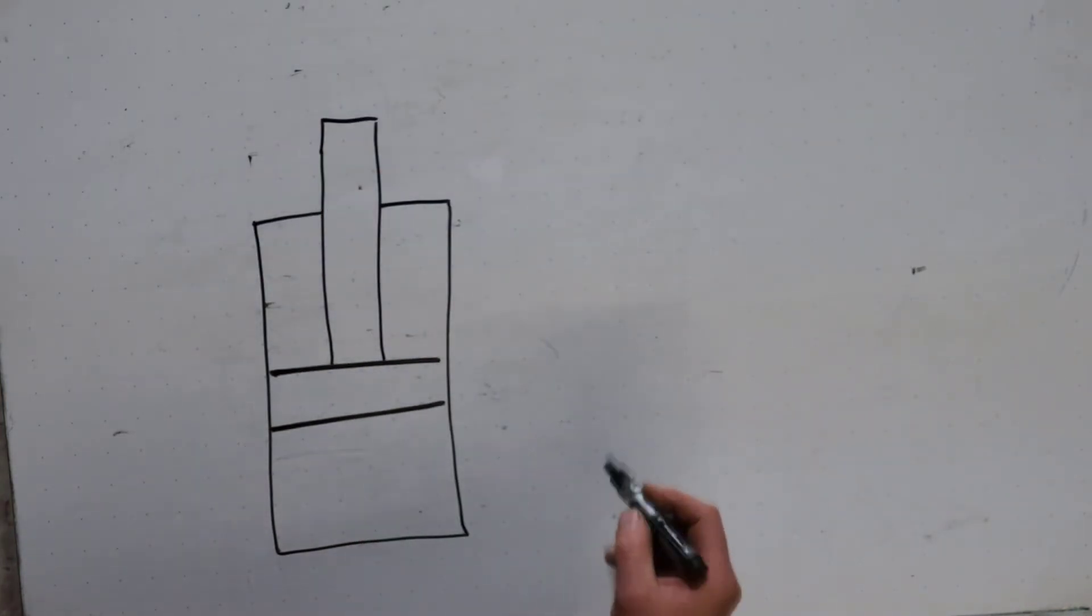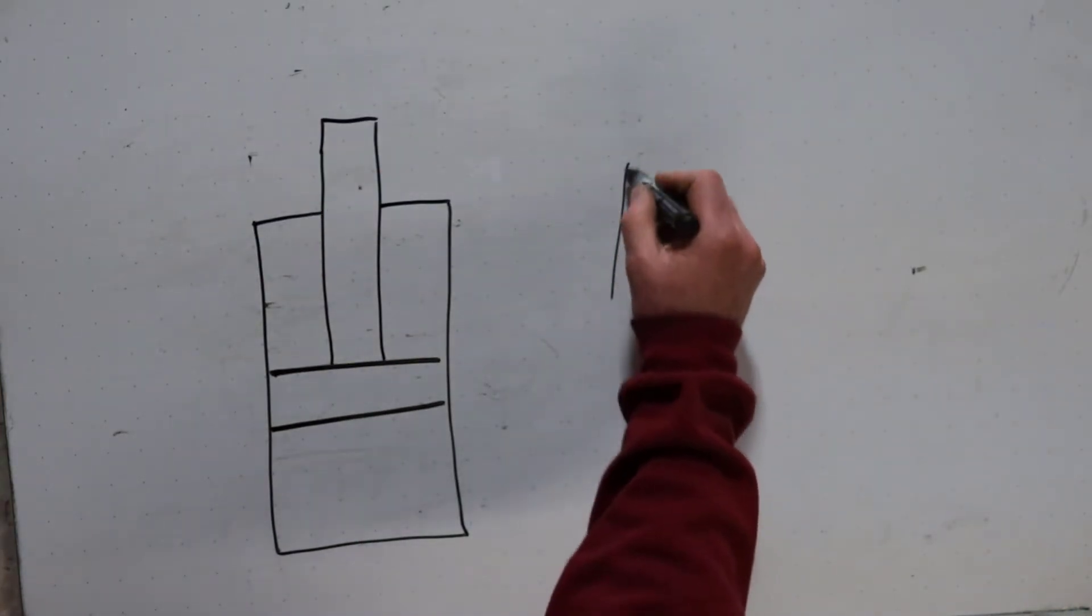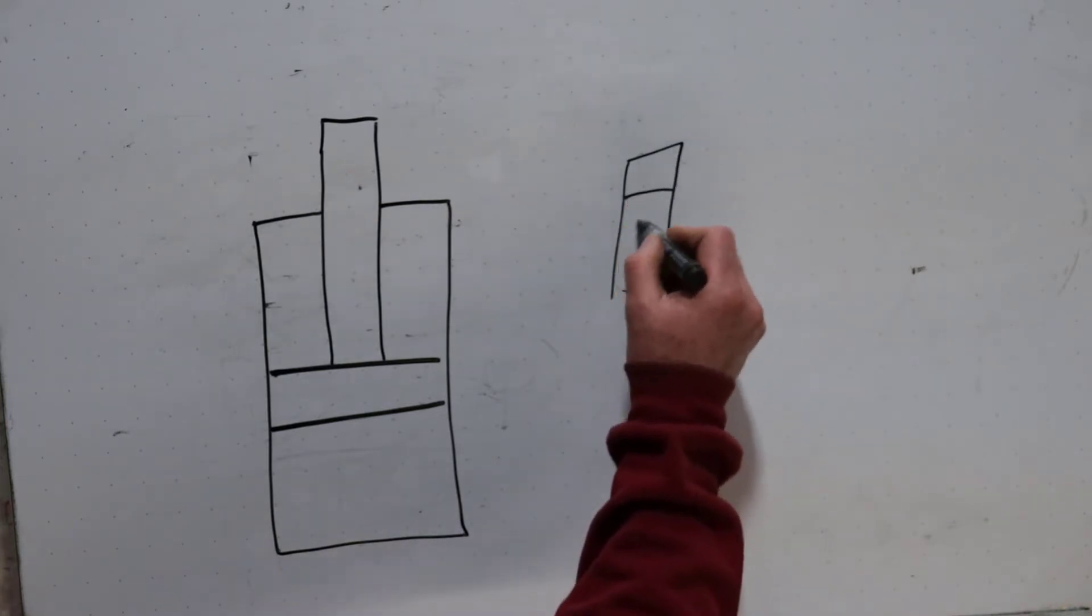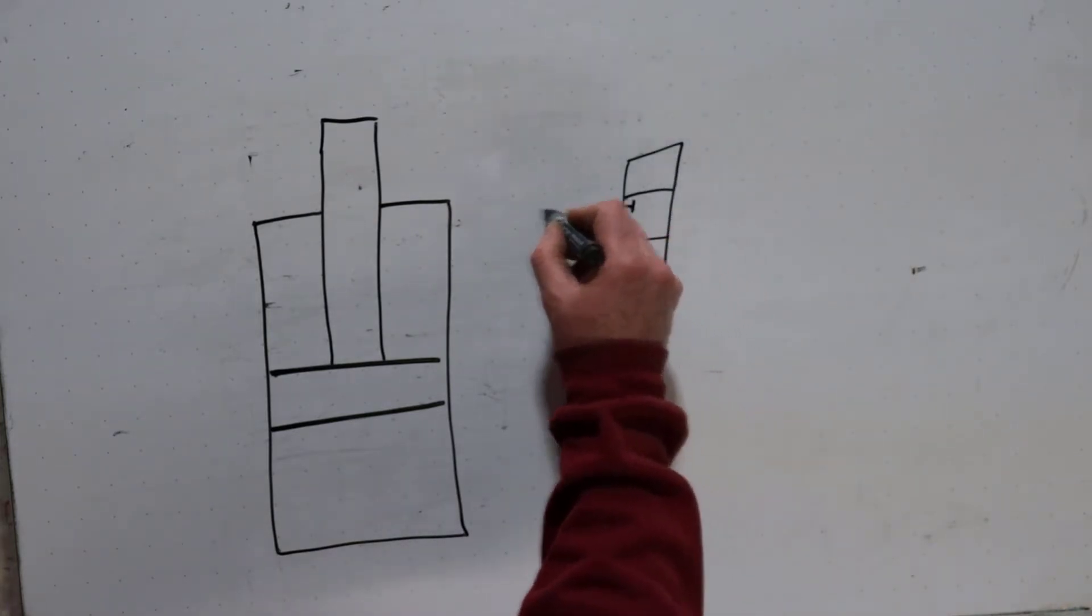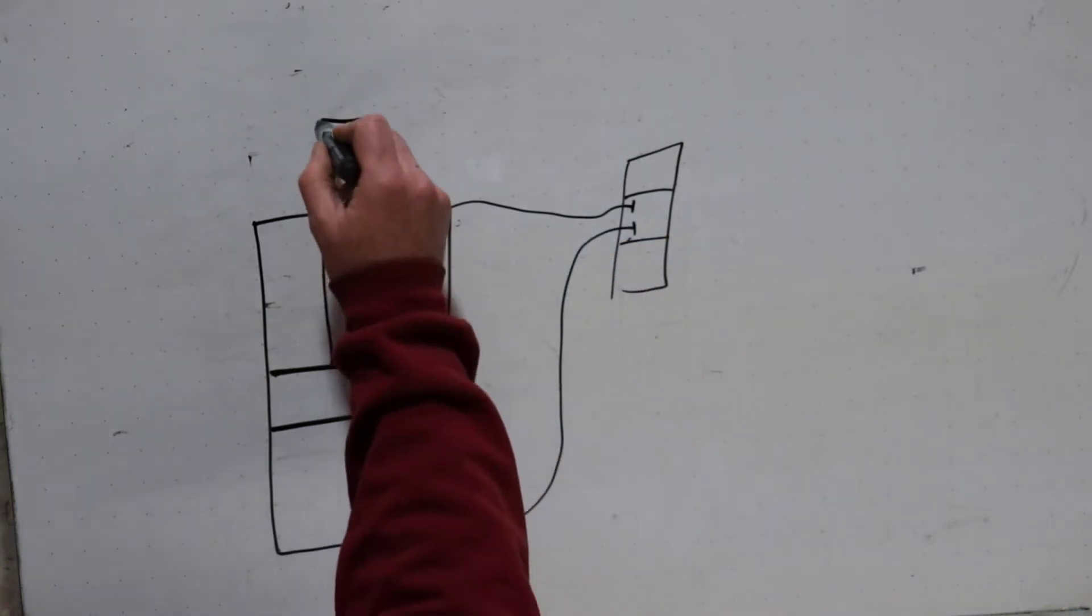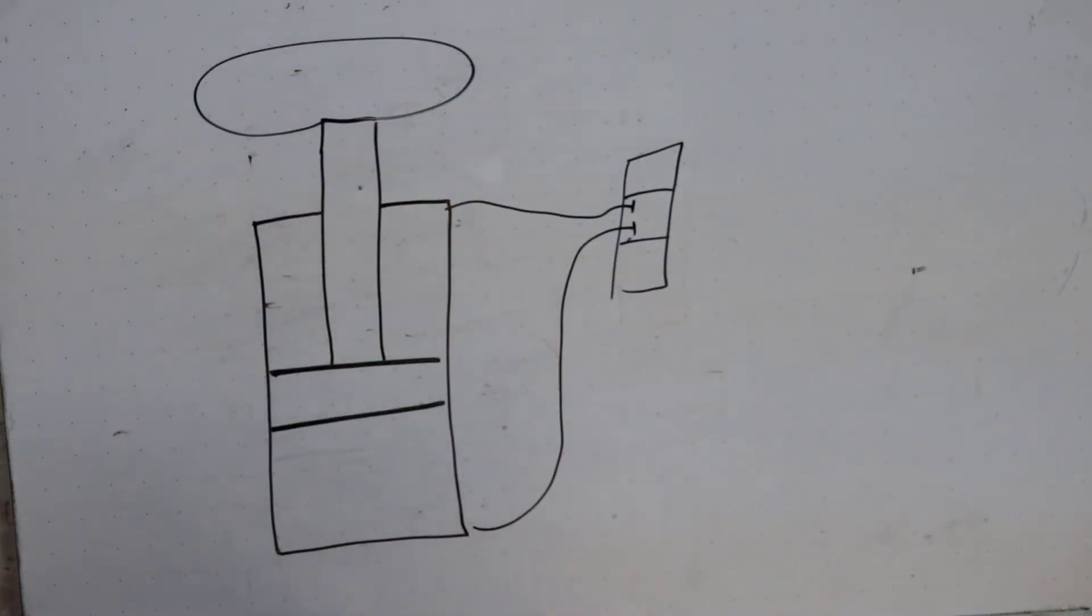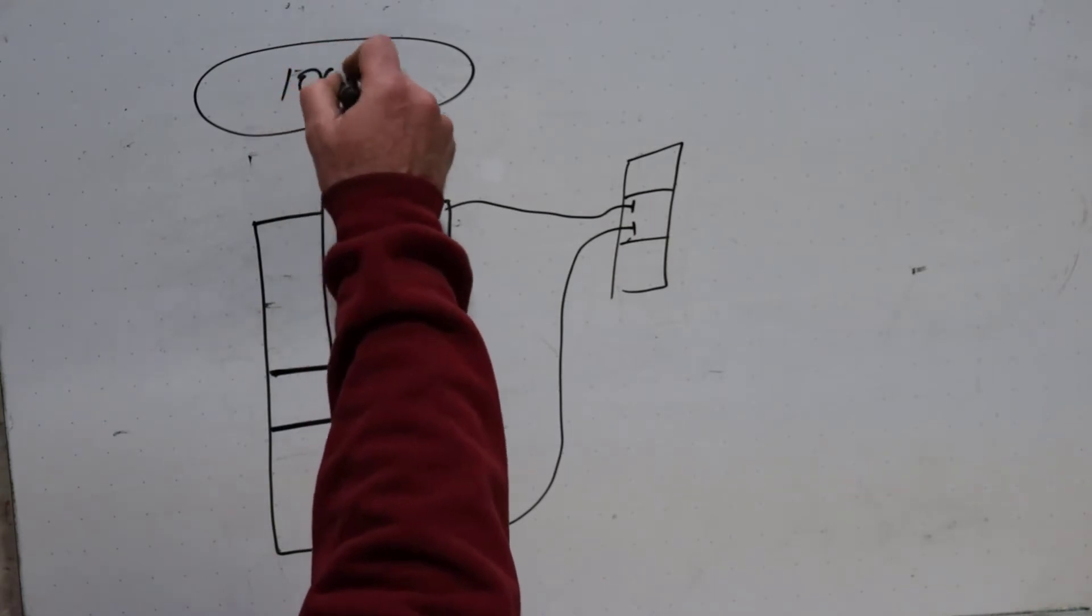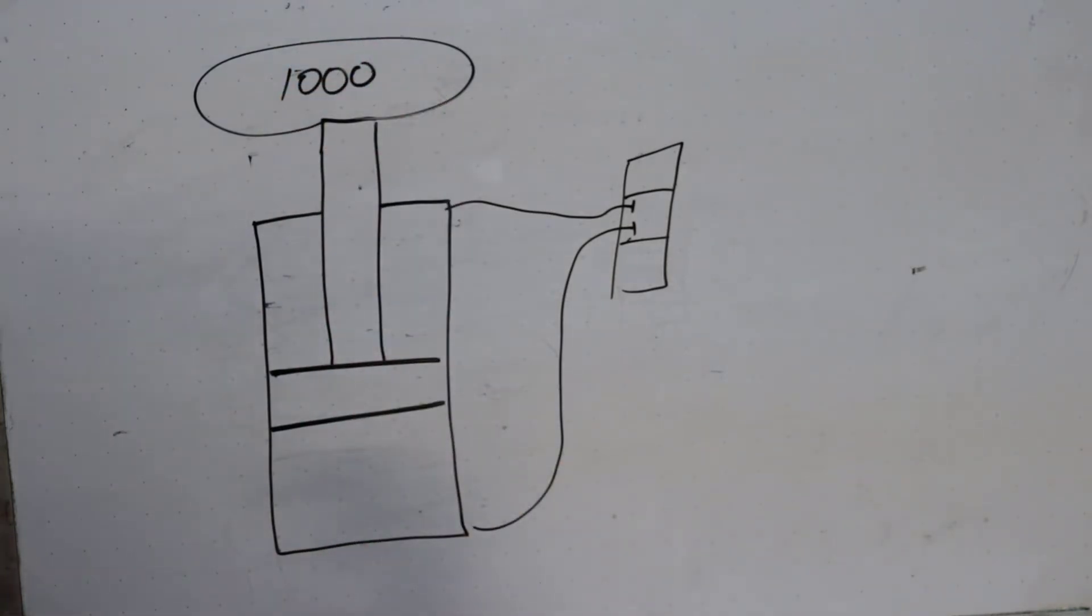So we have the same cylinder, same directional control valve, closed work port, and let's put the same load on it. And let's say that load is worth a thousand PSI.